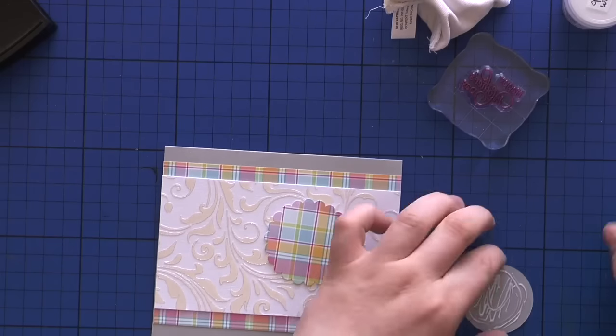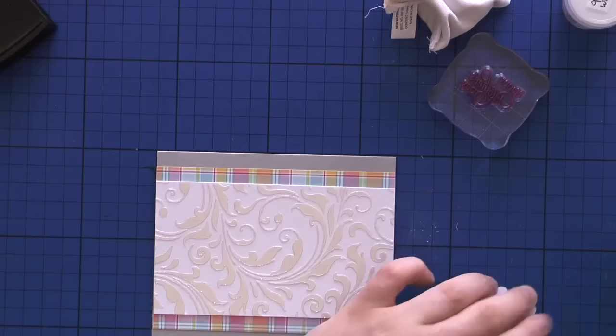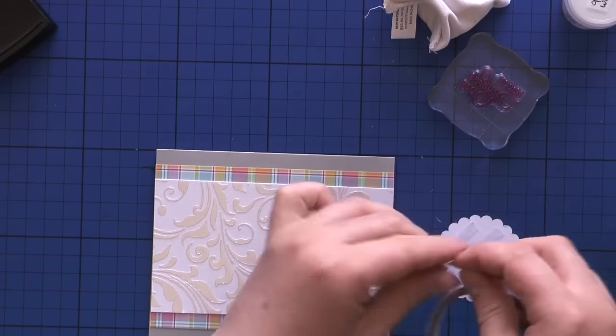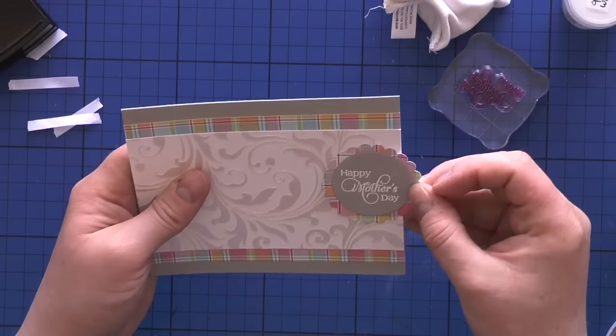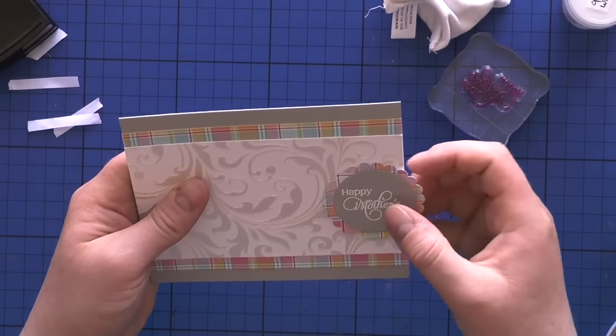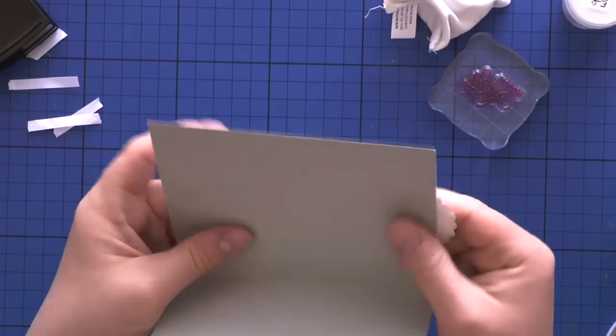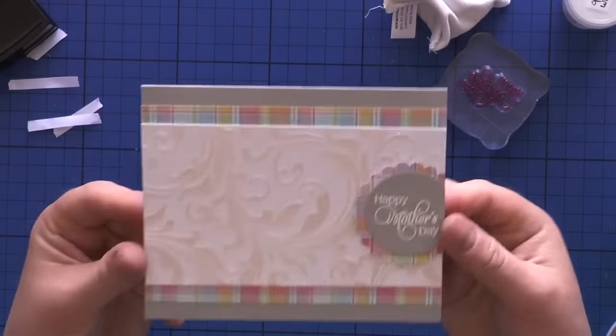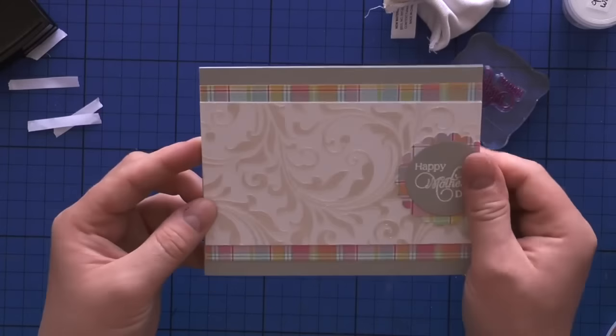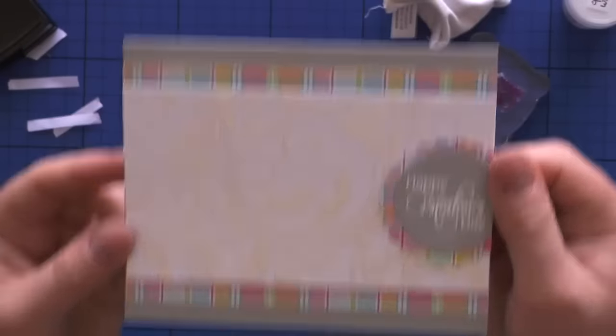I stamped the sentiment Happy Mother's Day using Versamark sticky ink, covered it with opaque white WOW embossing powder, and heat set it. I added it on the front of my card using Tombow Mono liquid glue and double-sided tape. I wanted it to go a little off to the side, so I cut off the excess. I really love how this beautiful pearly embossing paste looks against the colorful background.